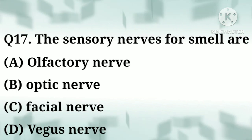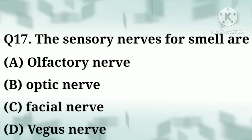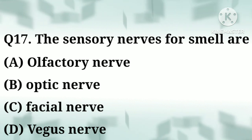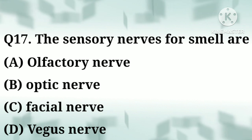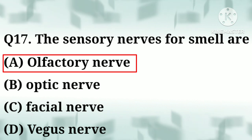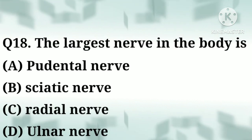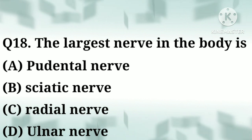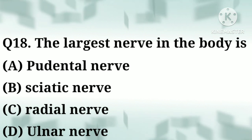Question number seventeen: the sensory nerves for smell are — option A: olfactory, option B: optic, option C: facial, option D: vagus. Correct answer: option A, olfactory nerve. Question number eighteen: the largest nerve in the body is — option A: pudendal, option B: sciatic, option C: radial, option D: ulnar.